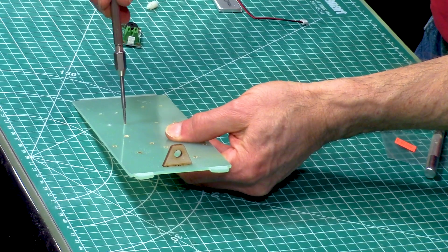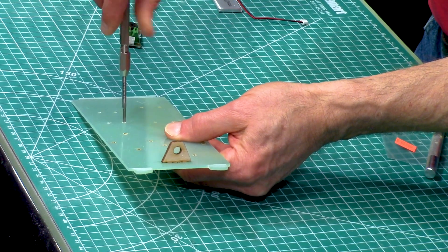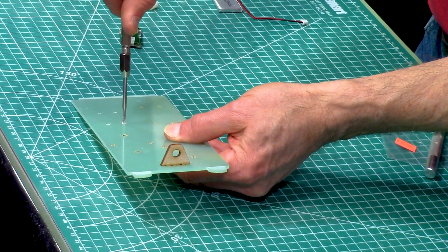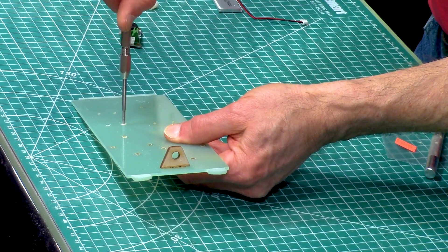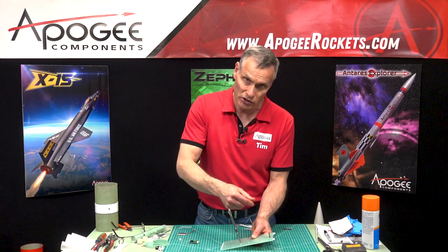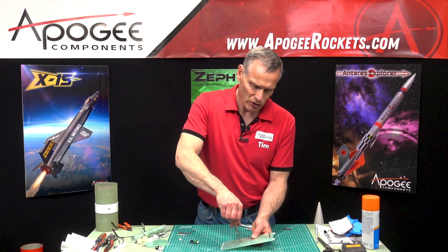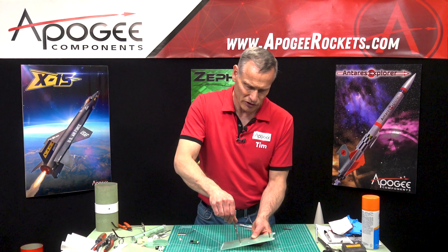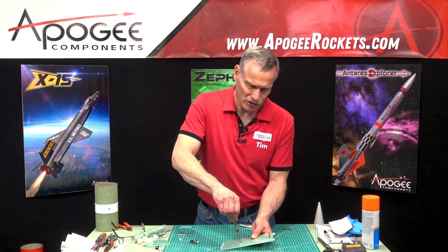To use this you just twist it in slowly and then back it out, then twist in, back out. Basically you're taking the threads and getting all the material back off to the surface.